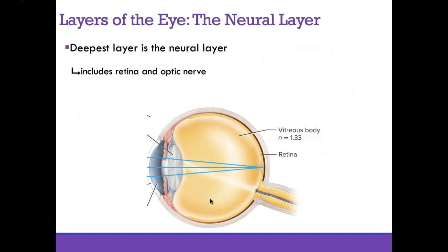Finally, the inner layer is called the tunica interna or the retina. The retina and the optic nerve make up the neural layer — that's the movie screen that is communicated to the brain.